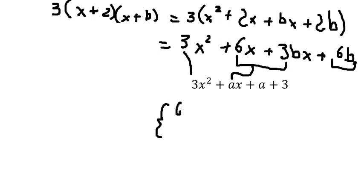So we have number 6 plus 3b equals to a, and a plus 3 equals to 6b. So in this way we can find the value of a, because we have two equations and we have two variables.